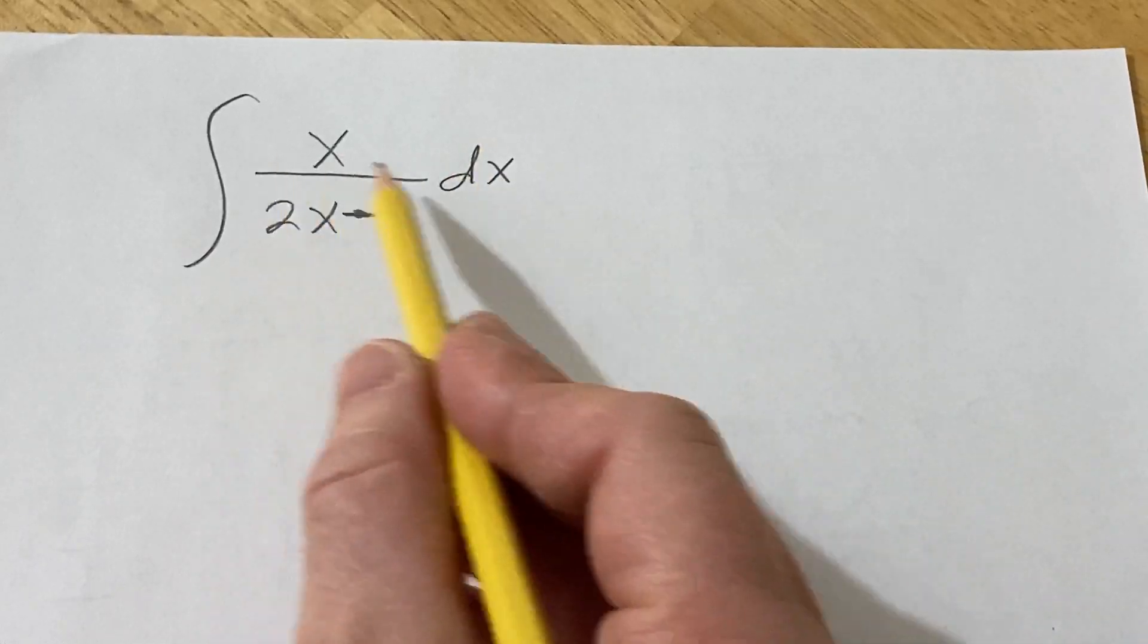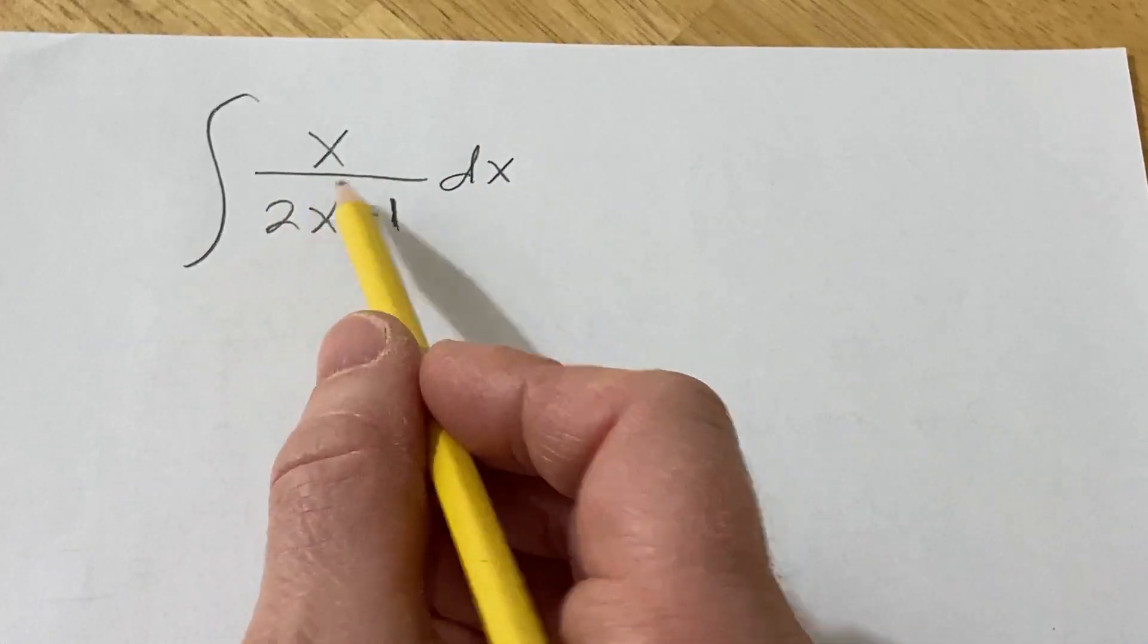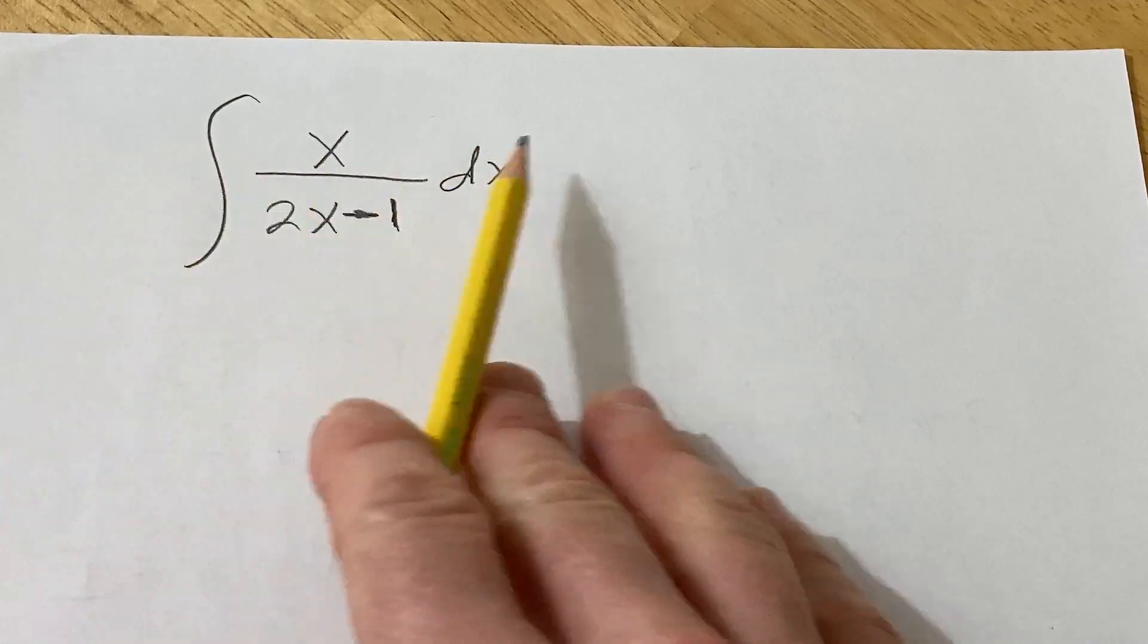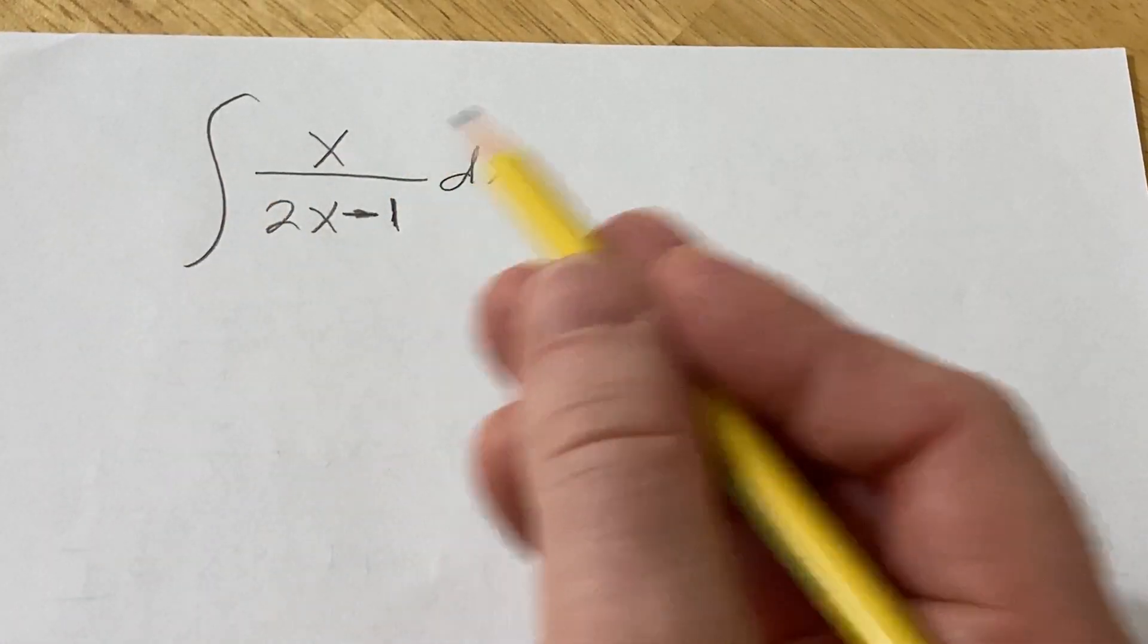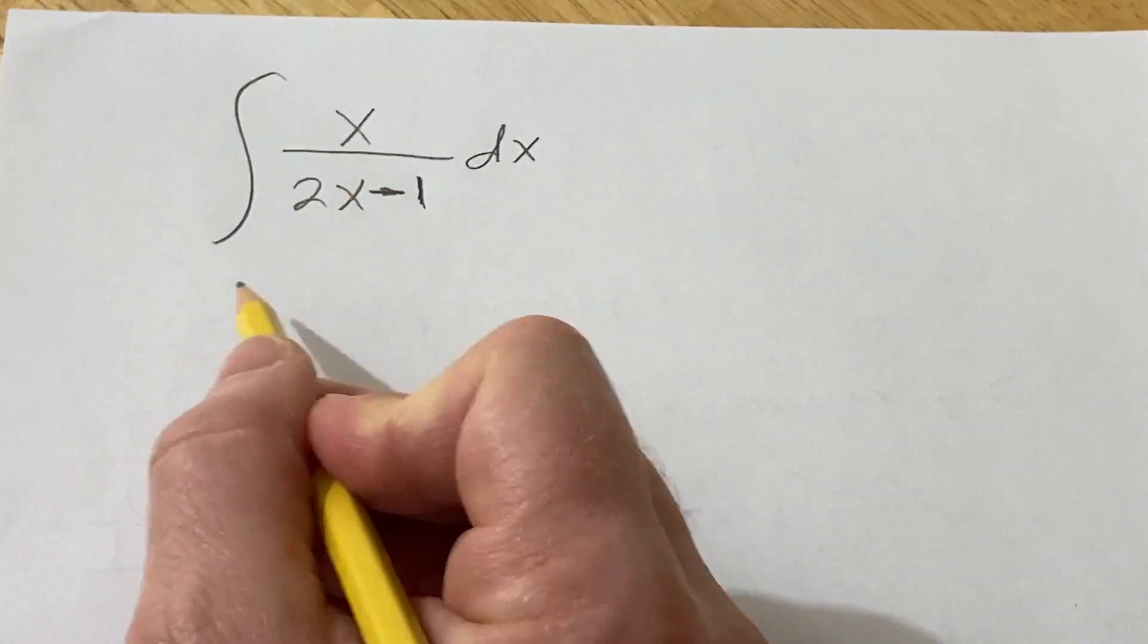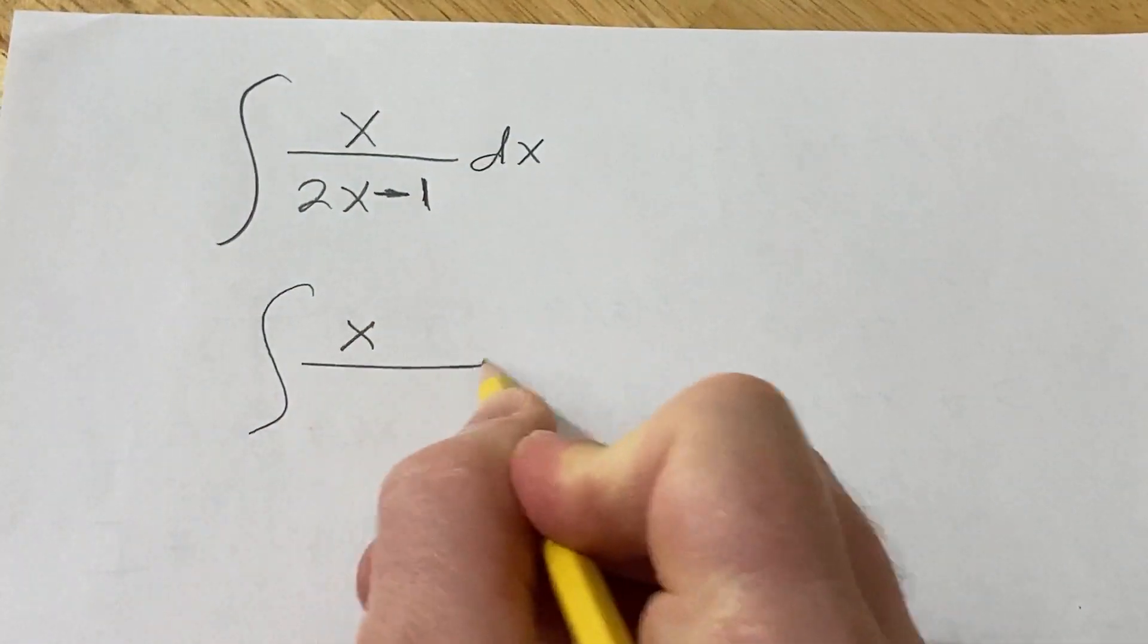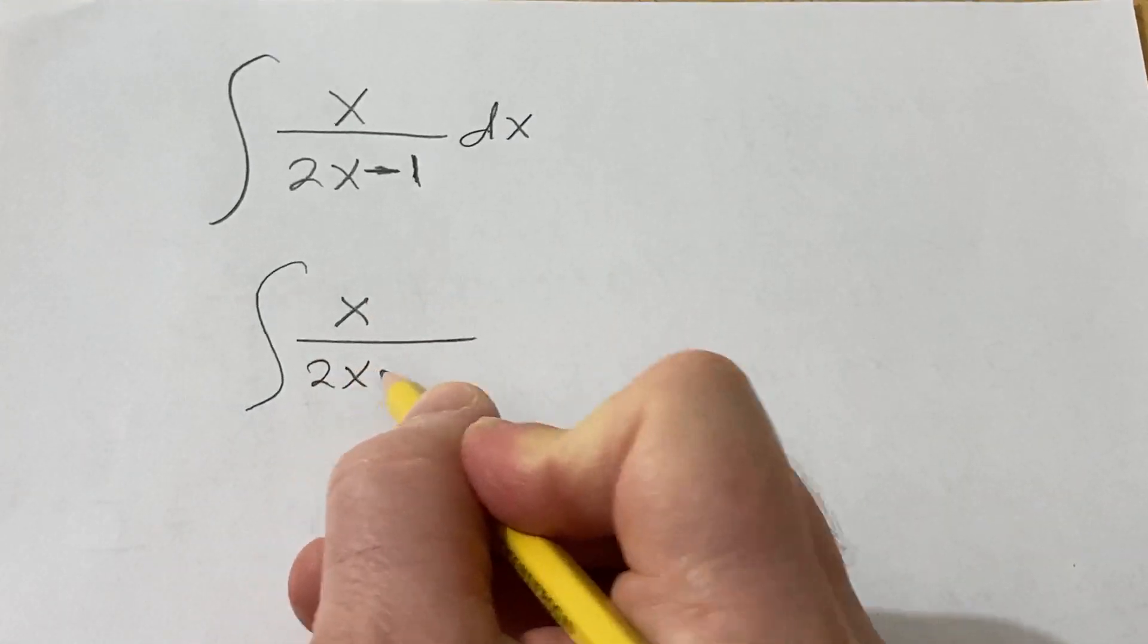So the shortcut is basically to use some algebraic manipulation to reduce this into something simpler that we can integrate right away. So watch this. I'm just going to think about it as follows. So I'm going to write it like this: x over 2x minus 1.